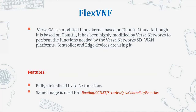Now let's discuss about FlexVNF. As I mentioned earlier, the controller and edge devices will be having the FlexVNF. The Versa Operating System is a modified Linux kernel based upon Ubuntu Linux, but it has been highly modified by Versa Networks to work according to their needs, so that we can perform all the Versa SD-WAN network related tasks. This feature is fully virtualized and can perform layer two to layer seven functions. You'll have the same image for routing, CGNat, security, quality of service — all the controllers and branches will be having the same image.